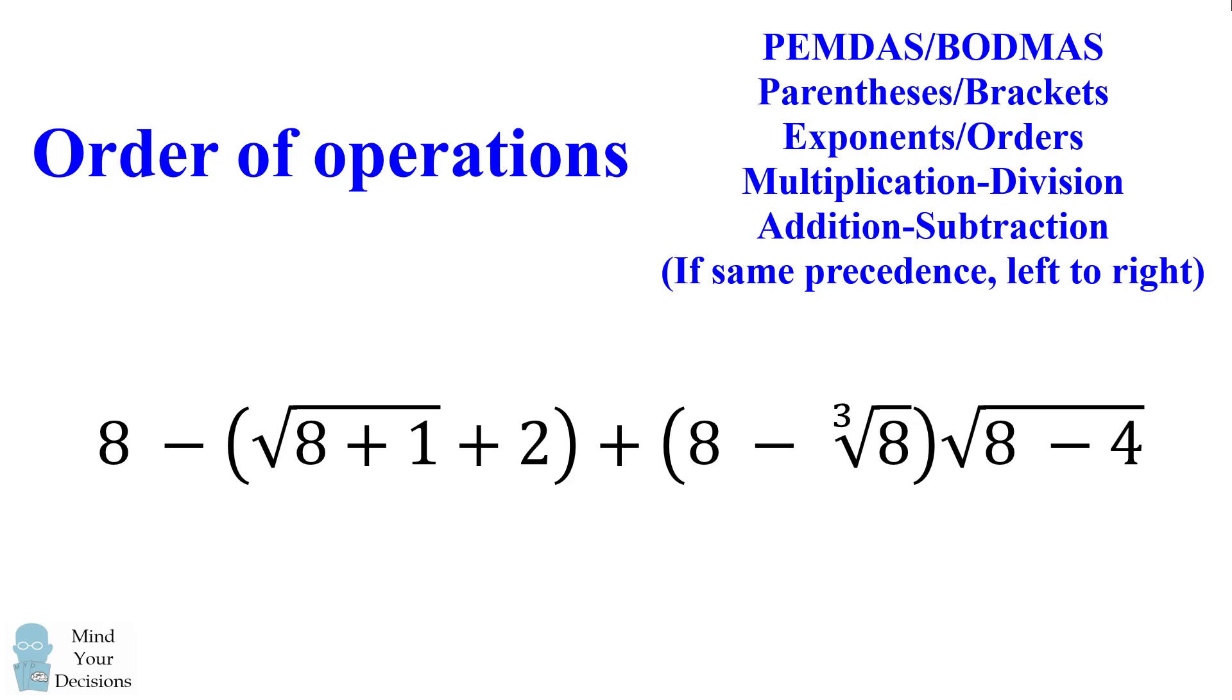We have parentheses brackets, then exponent orders, then multiplication division, and finally addition and subtraction. If we have two operators of the same precedence, then you should evaluate them from left to right. This single expression actually tests all of these rules.